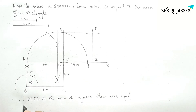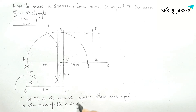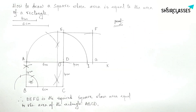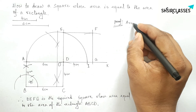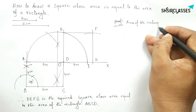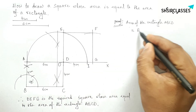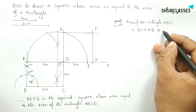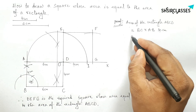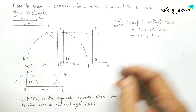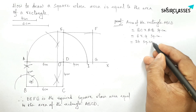Therefore, DEFG is the required square whose area is equal to the area of rectangle ABCD. Now proving this: the area of a rectangle equals length times breadth. Here, length equals BC and breadth equals AB. Putting the values: BC equals 6 centimeters and AB equals 4 centimeters, so area equals 24 square centimeters.